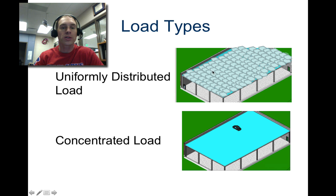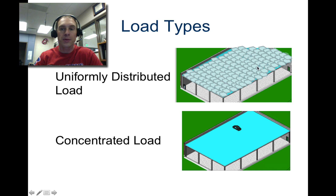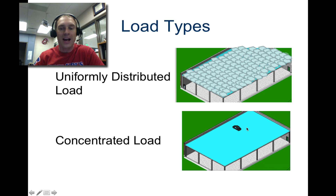Here are some load types. A uniformly distributed load means the load is spread evenly — these floor panels are uniformly distributed, making it even across. A concentrated load is when the load is only in one place.